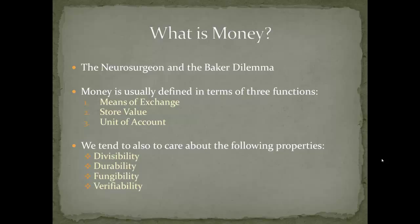Finally, verifiability. It's really important that we understand that the money we receive is indeed legitimate and that everybody agrees it's the money society is going to use. I can't just write 'one dollar' on a piece of paper and hand it to you — it has to be verifiable as a true dollar. So that's money in a nutshell: it resolves the dilemma of specialization, allows us to buy things without bartering, stores value, establishes prices, and has properties like divisibility and verifiability.